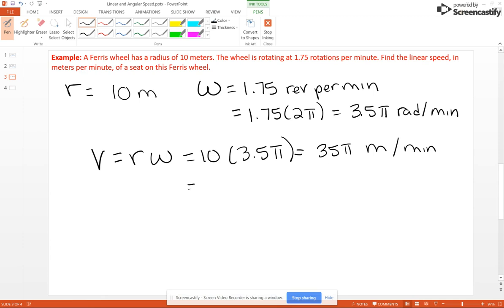And if you want the decimal answer, of course you throw this into your calculator again. And let's round to the nearest foot, so 110 feet per minute.